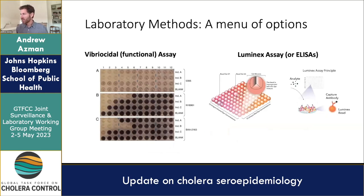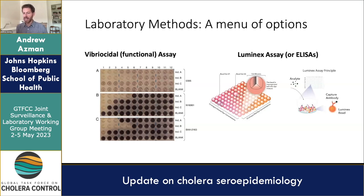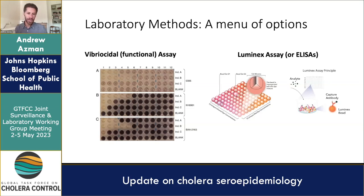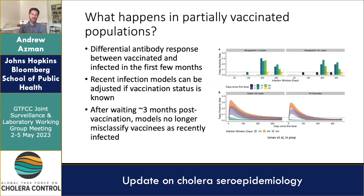We've narrowed in on a few methods for measuring these antibodies. The typical one used for a long time is the vibrocidal assay — a functional assay used in seroepidemiologic studies and vaccine evaluations, largely treated as the gold standard, though it's very labor-intensive with a lot of subjectivity. More recently, we've shown that the Luminex assay — which measures antibody responses on beads in a high-throughput way — performs very similarly to the vibrocidal assay. So we have multiple options.